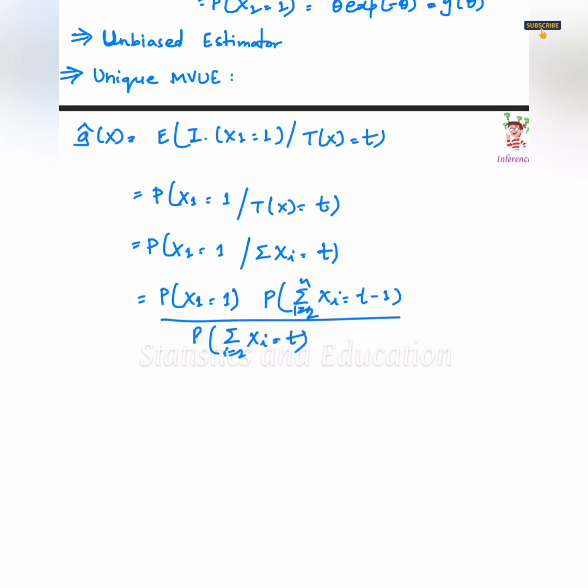Now, we know that sum of xi's where i is from 1 to n is equal to t, and x1's value is already 1. So, summation xi, i goes from 2 to n will be equal to t minus 1. Because x1 is already 1, and since all the variables are independent, we can treat each other in the PDFs.